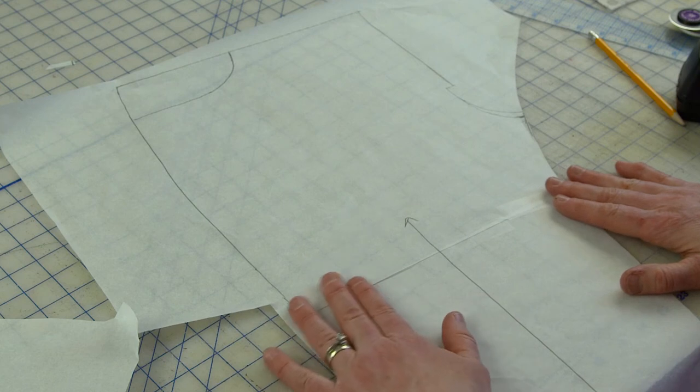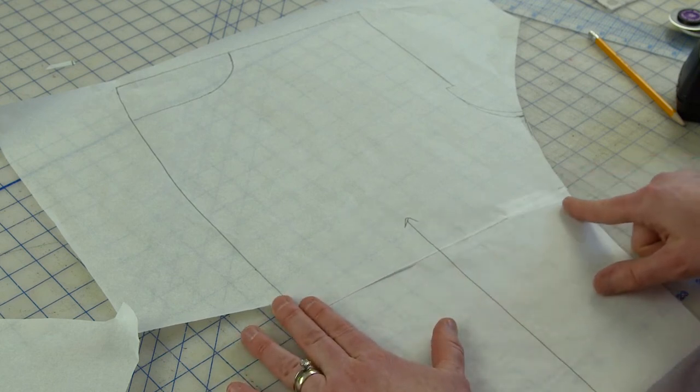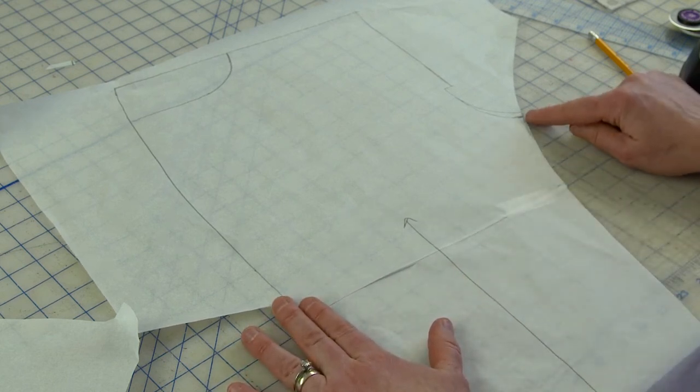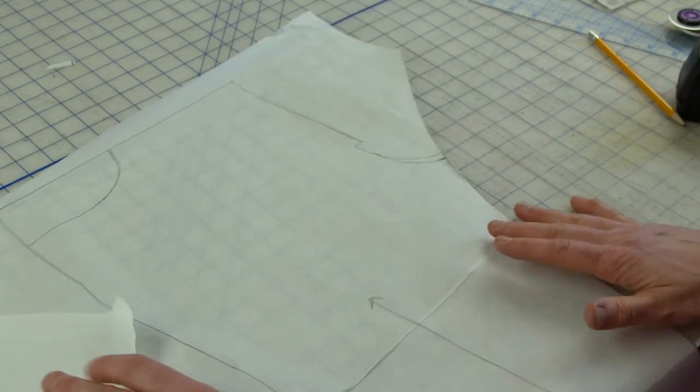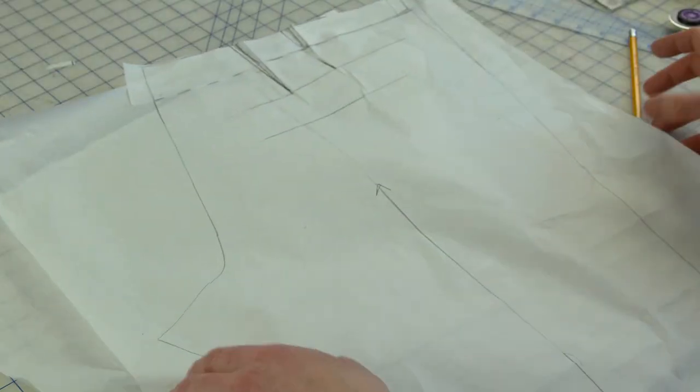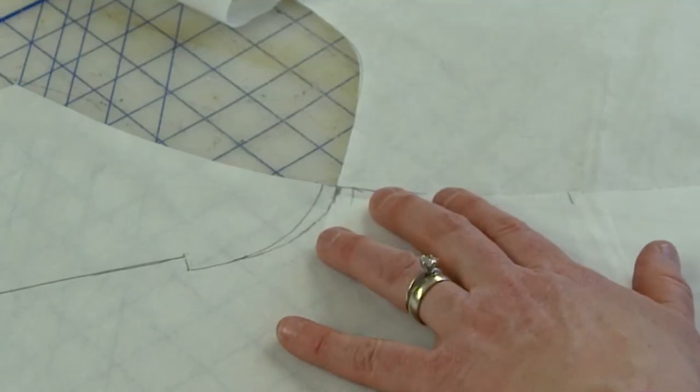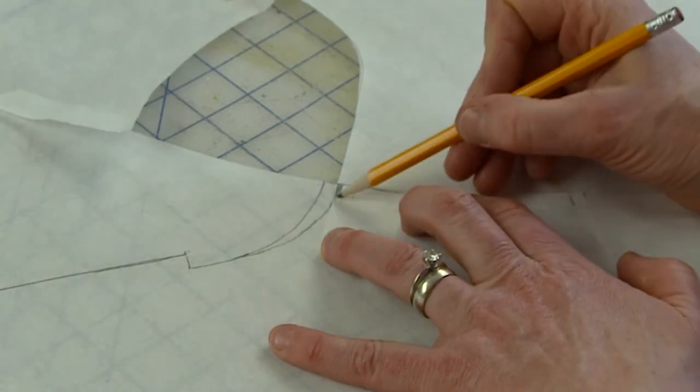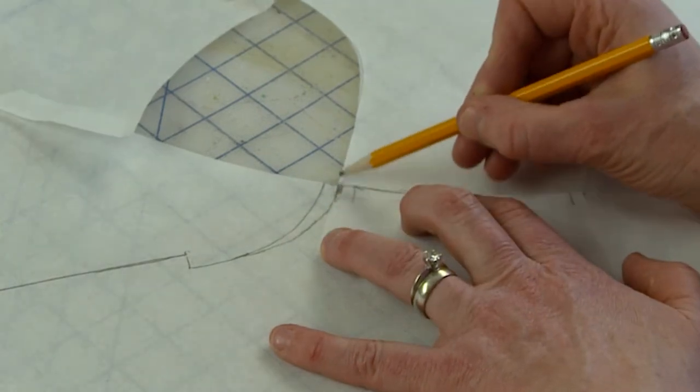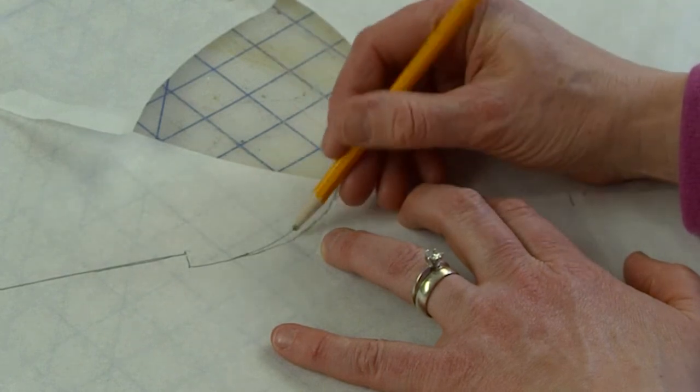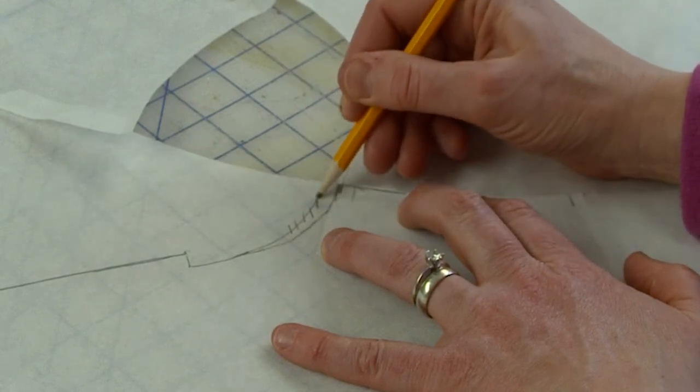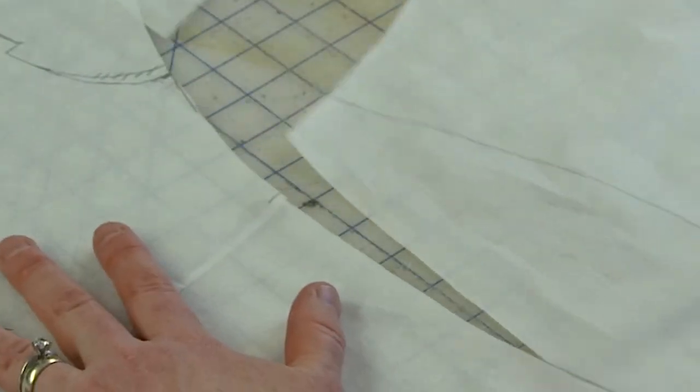You can see that doesn't really even change the grain line that much. So I've shortened it a quarter here and a quarter here. Anytime you play with the shape of your crotch, you just want to make sure it still agrees to the back. I just want to line them up with each other. And you can see that that's a nice smooth transition still. It doesn't peak up or do anything funny here. So that's okay. So this is going to be gone. And now I have adjusted my inseam to match front to back.